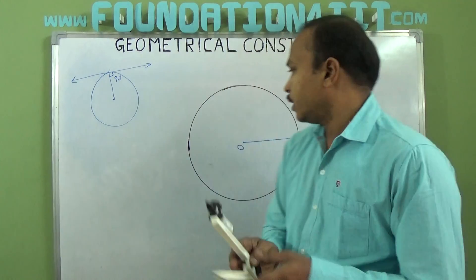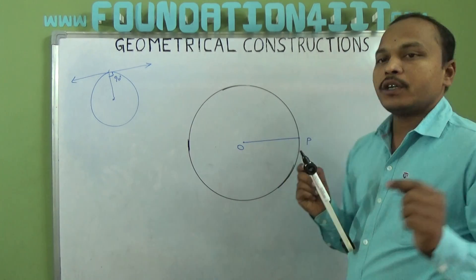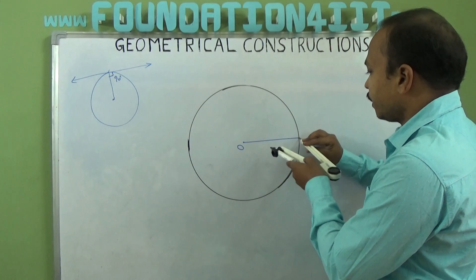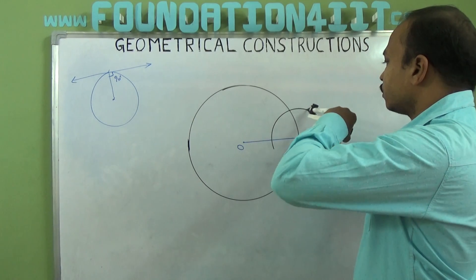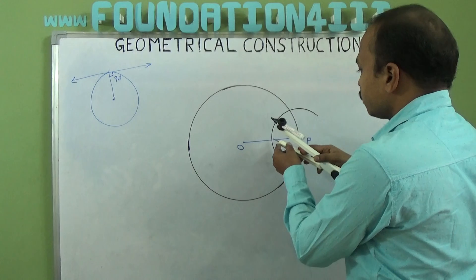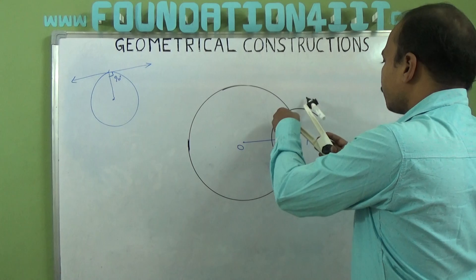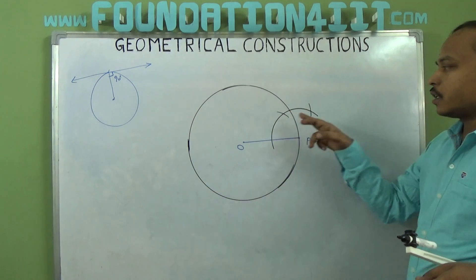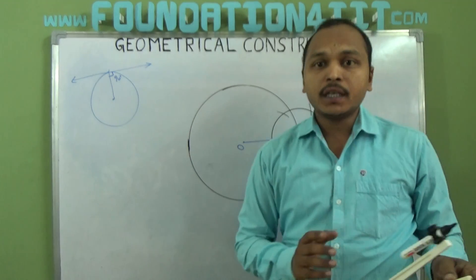At point P we'll draw a perpendicular line, so at point P I need to construct 90 degrees. Just draw an arc from P. Then from the same radius without changing, draw an arc — that gives 60 degrees. And one more arc gives 120 degrees. So 60 and 120: if you bisect, you'll get 90 degrees.